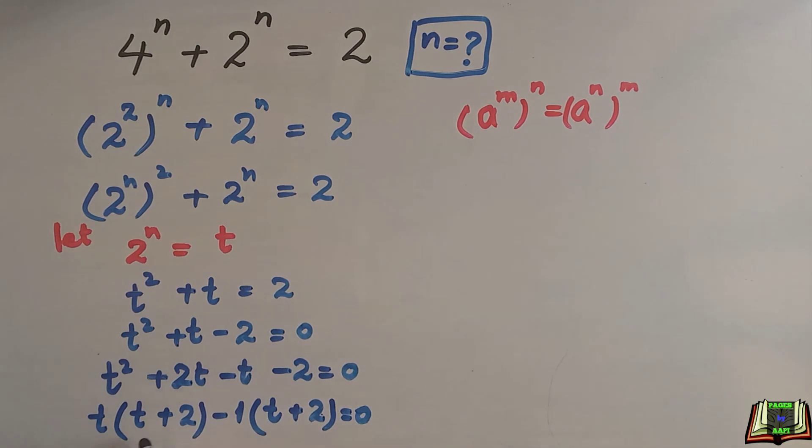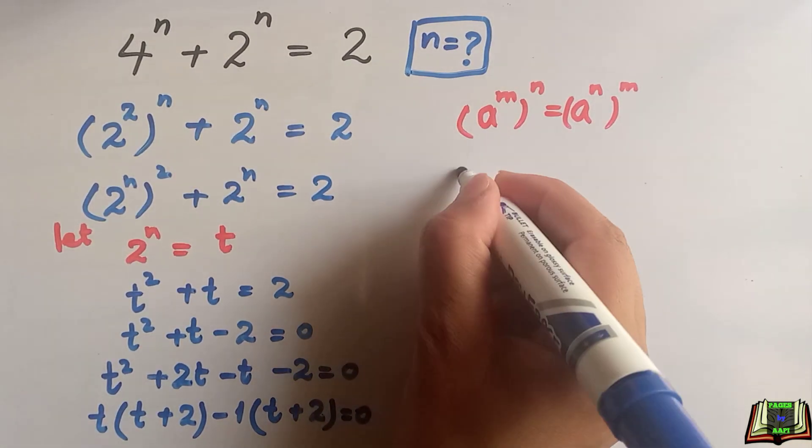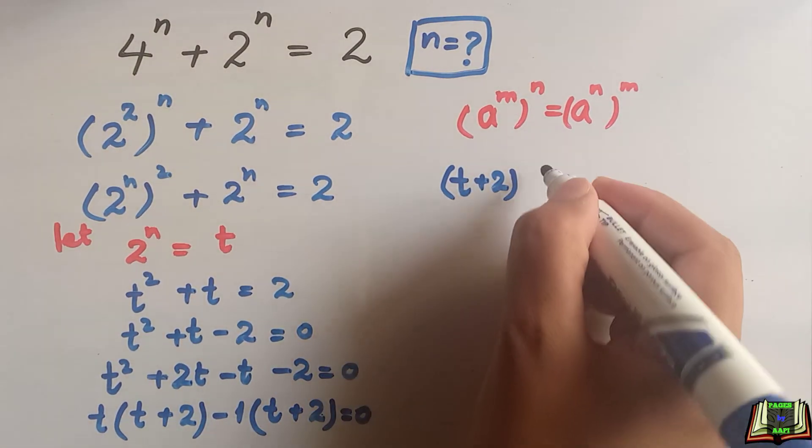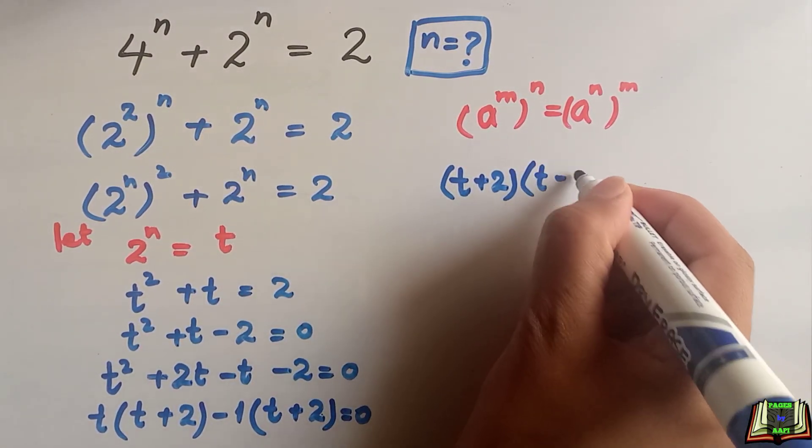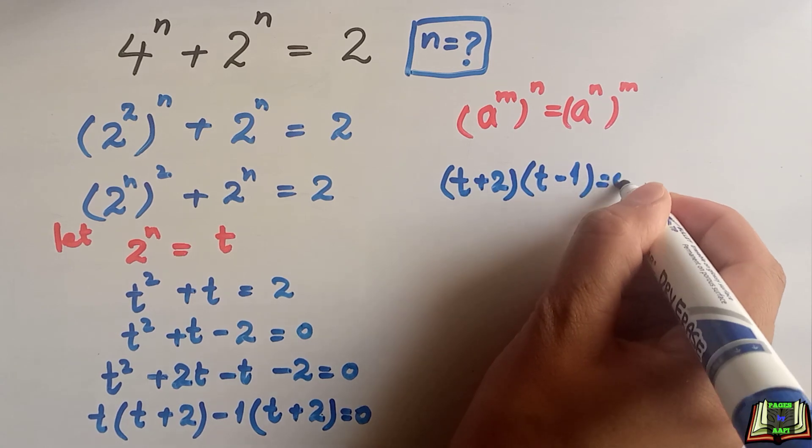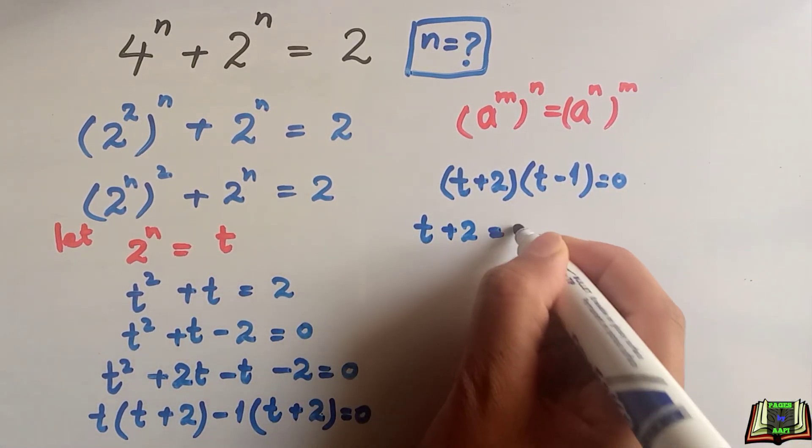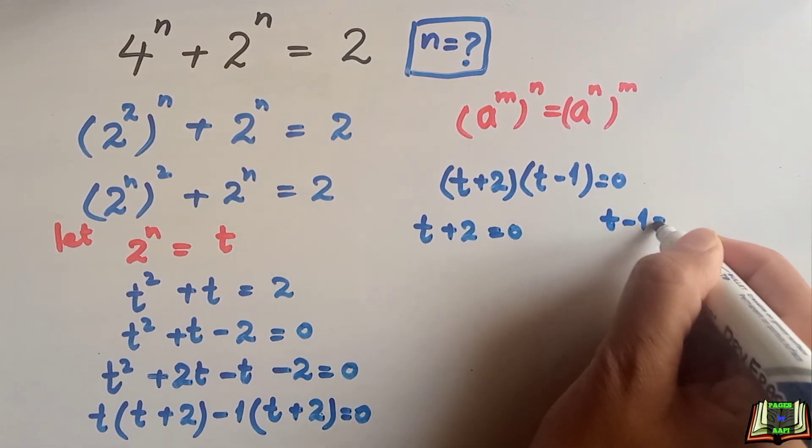Here we got the two factors: t plus 2 times t minus 1 is equal to 0. If t plus 2 is equal to 0 then t minus 1 is also 0.